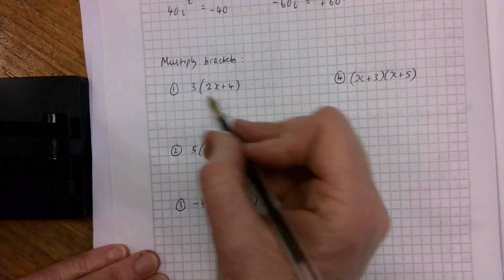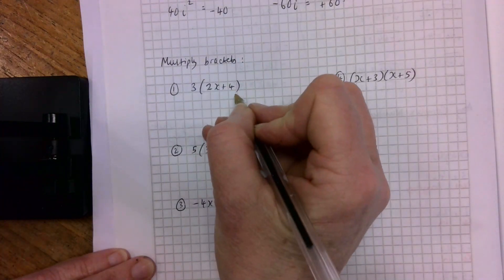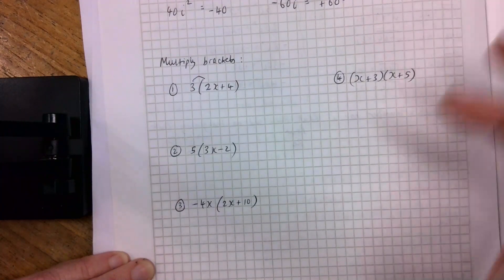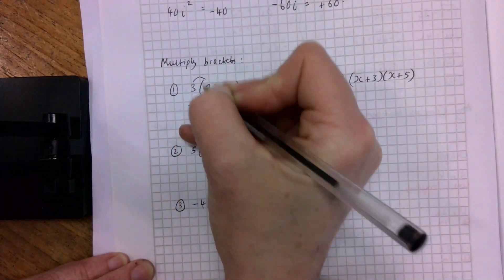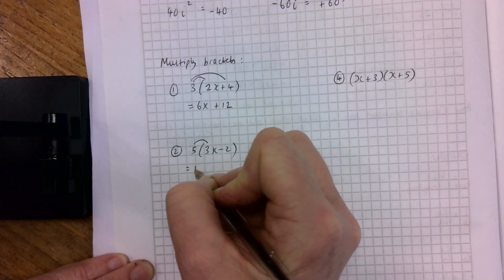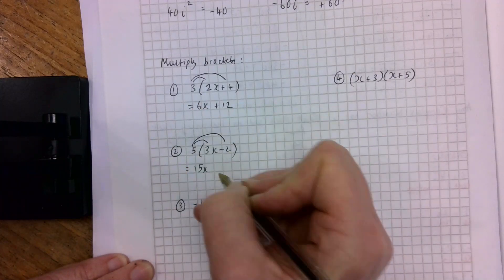When we multiply out brackets, we multiply everything in the bracket by what's outside. So we have 3 by 2x, which would be 6x, and 3 by 4 would be 12. 5 by 3x would be 15x, and 5 by minus 2 would be minus 10.